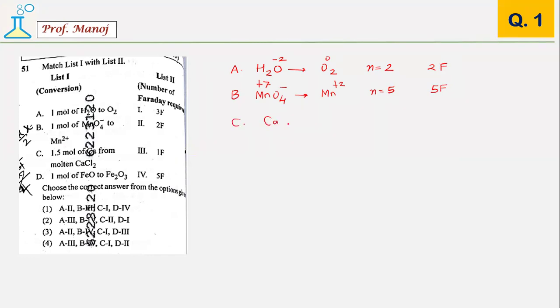Similarly, MnO4 minus converted to Mn plus 2. Manganese is in plus 7 oxidation state, so there is a charge change of 5 units which matches to 5 Faraday. In option C, calcium converts into calcium chloride. The oxidation state is changing from 0 to plus 2, so N equals 2. But here they have given 1.5 mol, so this amounts to totally 3. If you check the answers, A matches with 2, B matches with 4, and C matches with 1. The answer is option 3.